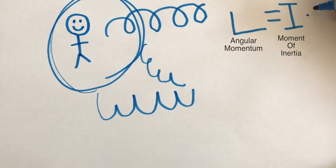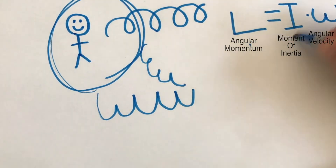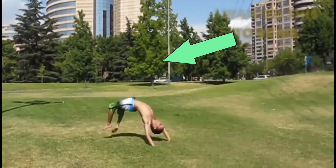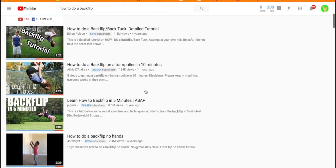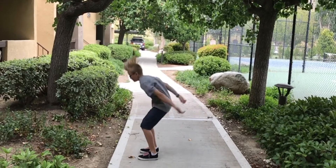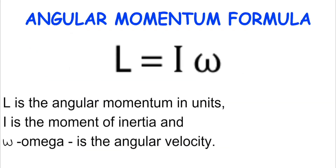Angular momentum explains how much power an object has when it's spinning around in a circle. A few months ago I wanted to learn how to do a standing backflip. I went online and found a bunch of tutorial videos, and eventually, with a bit of practice, I was able to achieve it. Although there are a number of other physics concepts involved, such as Newton's first law and torque, I will only be focusing on angular momentum.